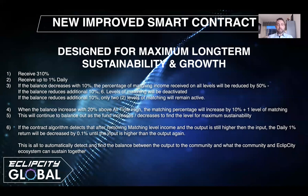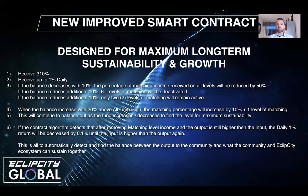This will continue to balance out as the fund increases or decreases to find a level for maximum sustainability — this is what will make this contract last for decades to come. As an additional measure, if after removing matching level income the output is still higher than input, the daily 1% return will be decreased by 0.1% at a time until input exceeds output again. This security feature is added to maximize the fund's longevity.